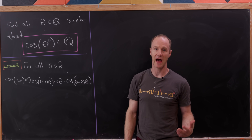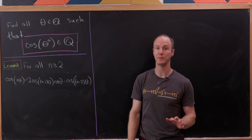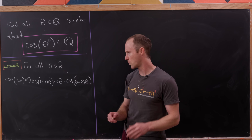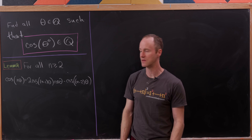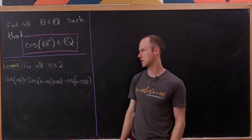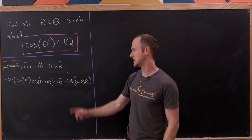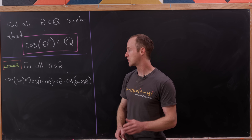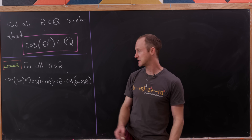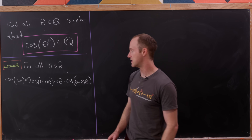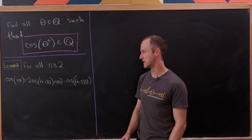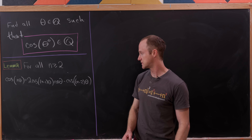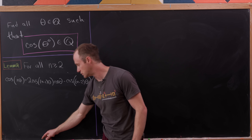Along the path of answering this question, we'll be really helped out by the following lemma for decomposing cosine of nθ into smaller parts. For all n ≥ 2, the cosine of nθ equals 2·cos((n−1)θ)·cos(θ) minus cos((n−2)θ).